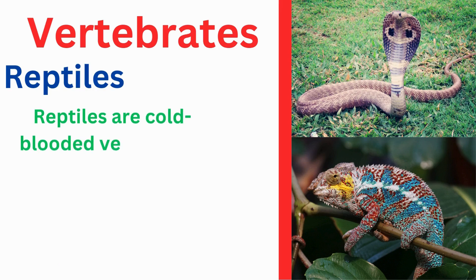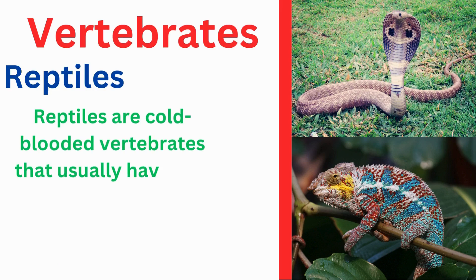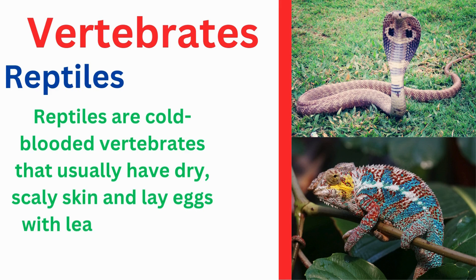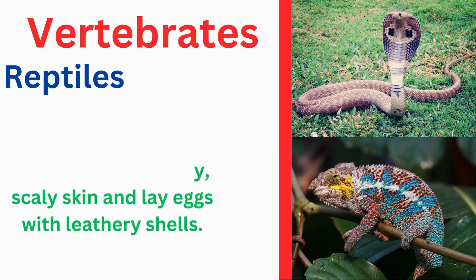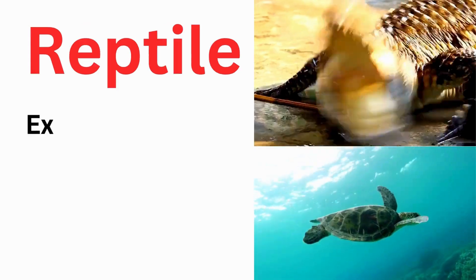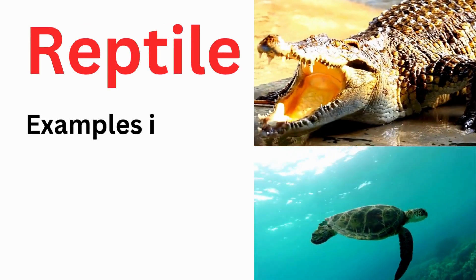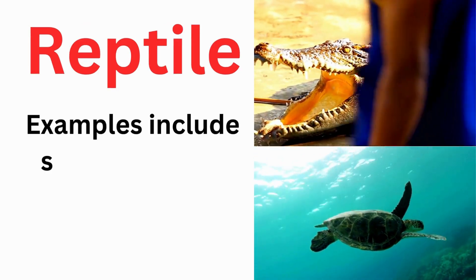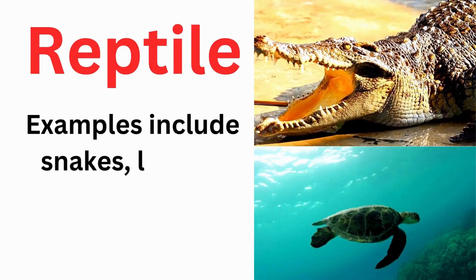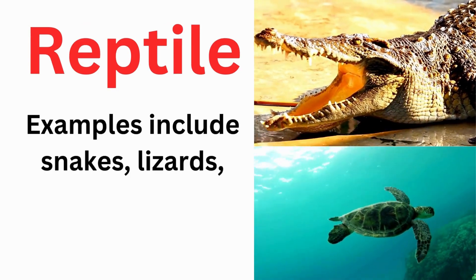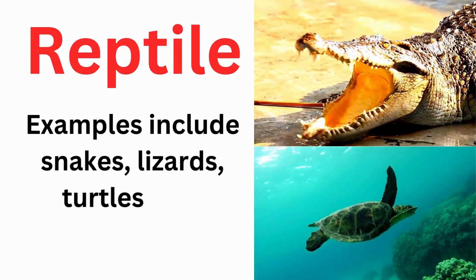Reptiles are cold-blooded vertebrates that usually have dry, scaly skin and lay eggs with leathery shells. Examples of reptiles are snakes, lizards, turtles, and crocodiles.